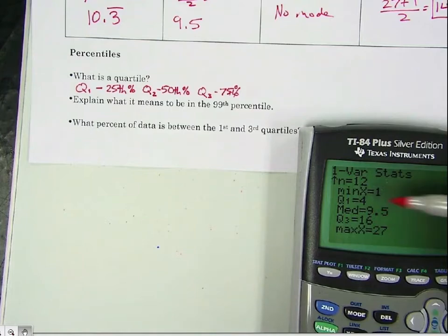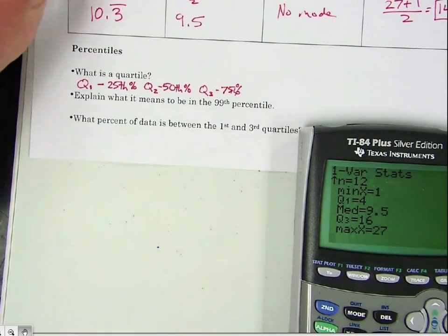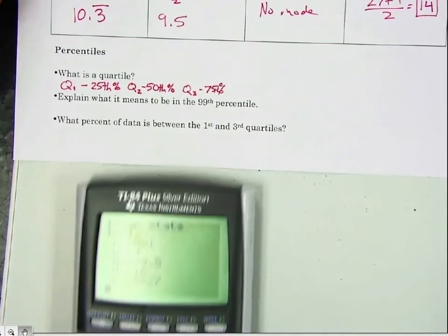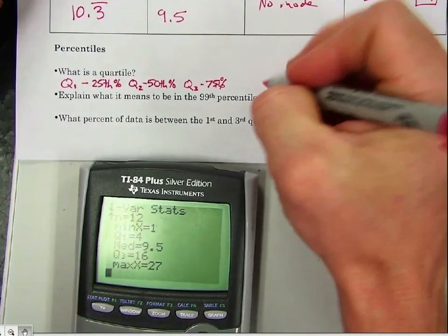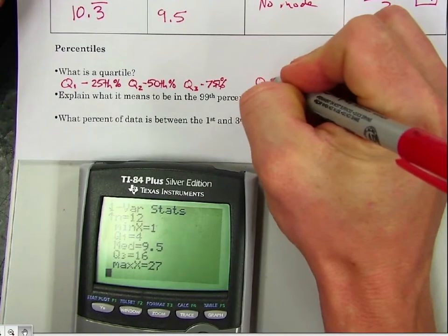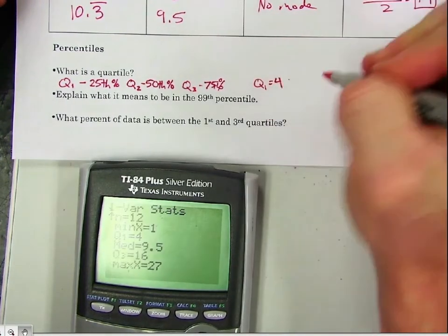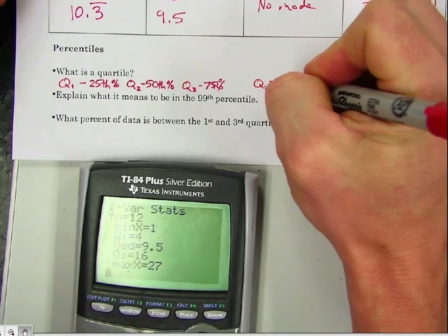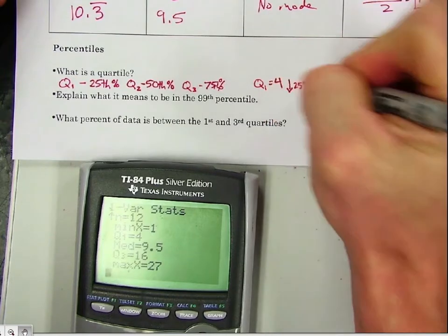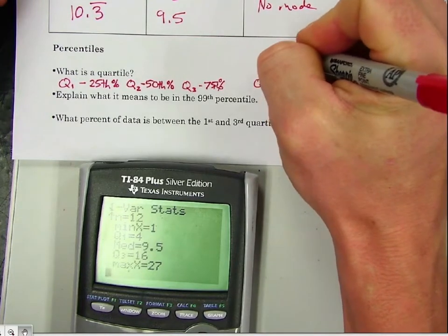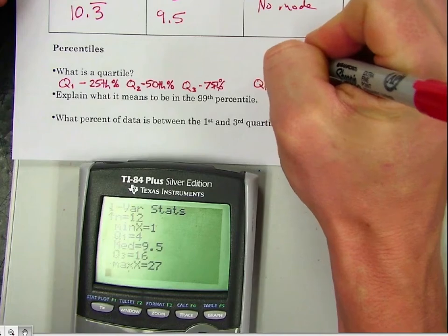So in the previous example, quartile 1 was the number 4. Now what that means is that 25% of the data is below this, and 75% of the data is above it.